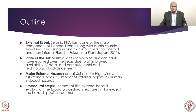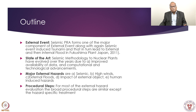Major external events include seismic, high winds, external flood, impact of external objects, and human-induced hazards. We will focus our attention only on seismic PRA — seismic probabilistic risk assessment procedure. Here we will discuss the procedural steps involved in external hazard evaluation. The major part of this exercise involves having a hazard curve, then looking at the strength of the plant or component, seeing an overlap or no overlap, and based on that we give failure probability of the component.